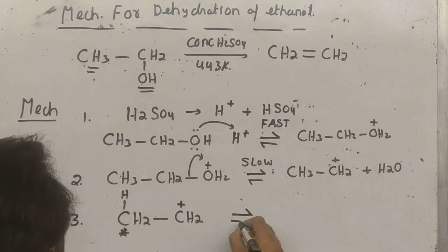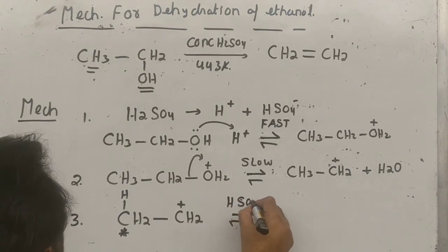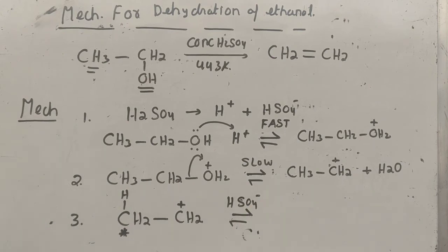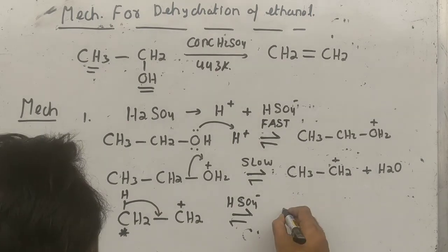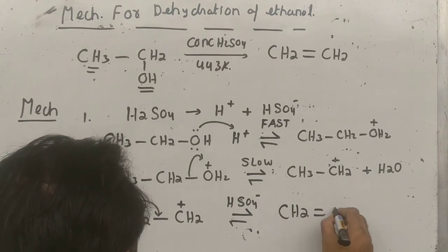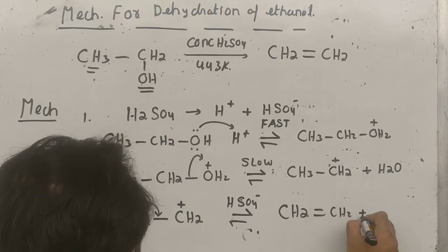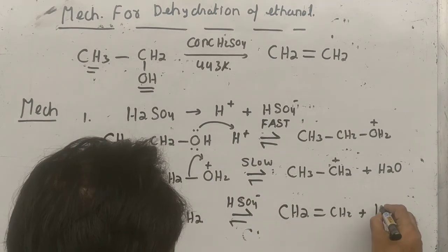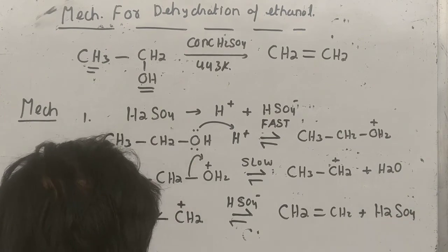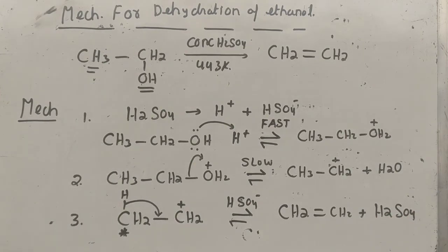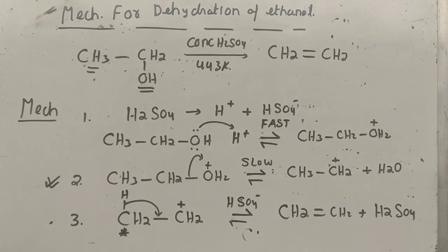Step 3: The carbocation loses H⁺ — this is called deprotonation. From the adjacent carbon, H⁺ is lost. The H⁺ coming out is accepted by HSO₄⁻ formed in the first step. The two electrons form the double bond and you get ethene. The H⁺ is accepted by HSO₄⁻, regenerating H₂SO₄. Overall, the second step is the rate-determining step — it is the slowest because it involves breaking a very strong bond.